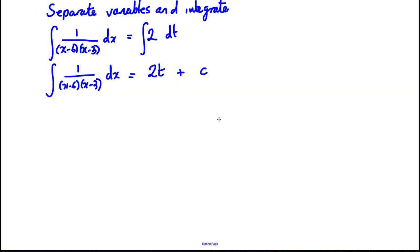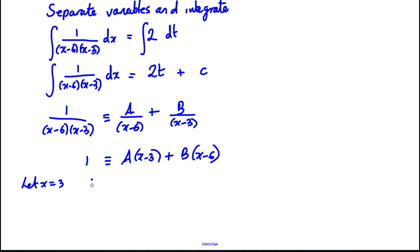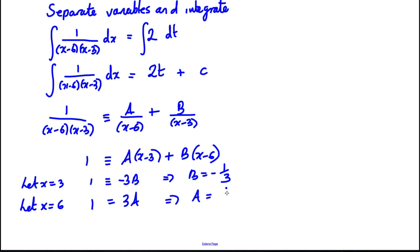It's going to be partial fractions. So I'm going to put 1 over (X − 6)(X − 3) in partial fractions as A over (X − 6) plus B over (X − 3). Then 1 equals A(X − 3) + B(X − 6). Letting X equal 3: 1 equals −3B, so B equals −1/3. Letting X equal 6: 1 equals 3A, so A equals 1/3.